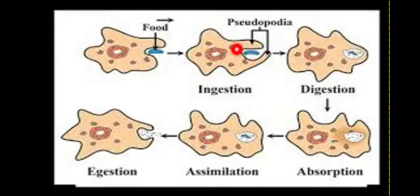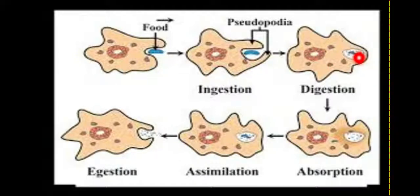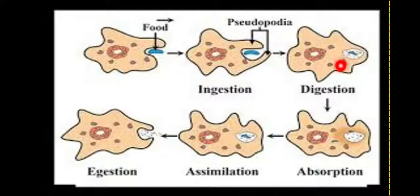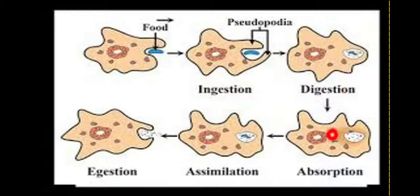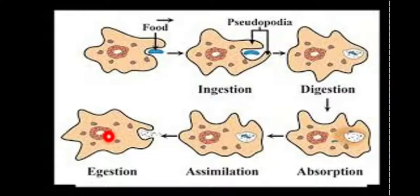Once the food is captured by pseudopodia, it is sent into the food vacuole. Amoeba's cell contains a number of food vacuoles. Inside the food vacuole, digestive juices are released — just like how the stomach and small intestine release digestive juices in our body — and these juices help digest the food particle.